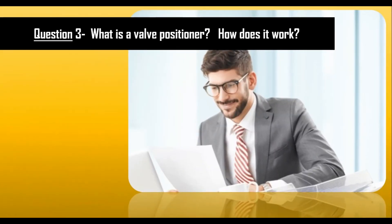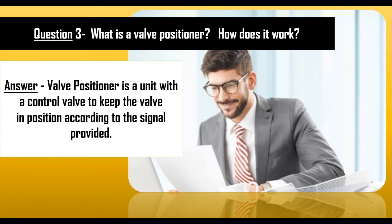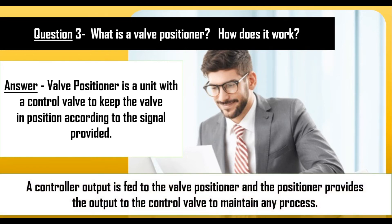The third question is: what is a valve positioner and how does it work? A valve positioner is a unit with a control valve to keep the valve in position according to the signal provided. For example, if the operating signal to the control valve is 50% or 75%, then the pneumatic control valve positioner will position the control valve accordingly. A controller output is fed to the valve positioner, and the positioner provides the output to the control valve to maintain any process — such as pressure, flow, or temperature.